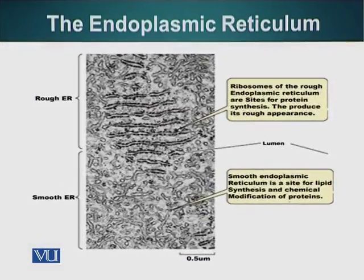Glycosylation serves two very important purposes. It can give proteins a longer life, protecting them from proteolysis by enzymes that degrade protein molecules. It also performs a very important function: it labels the protein in a way that serves as a sort of addressing system. The attachment of sugar molecules tells the cellular machinery where this protein is supposed to go.